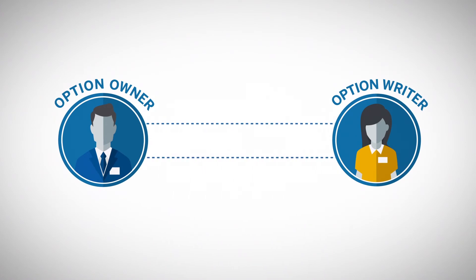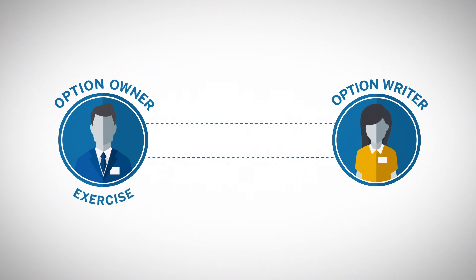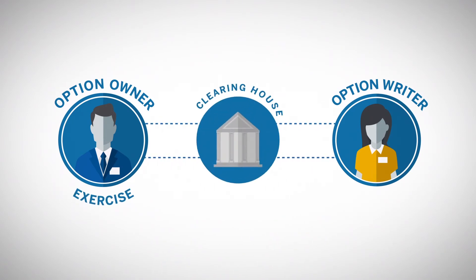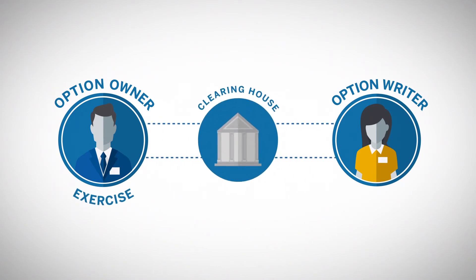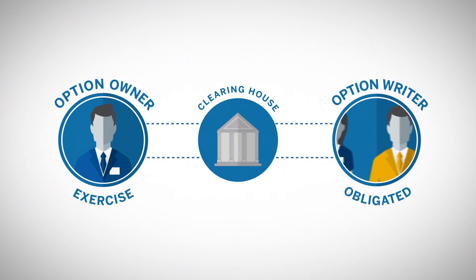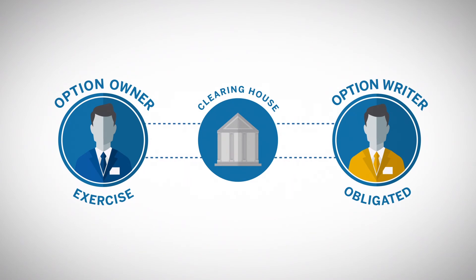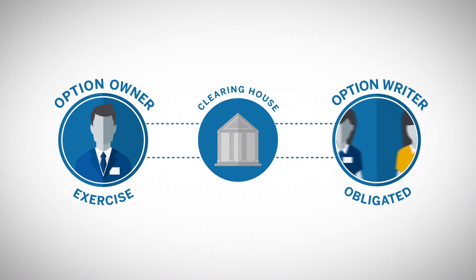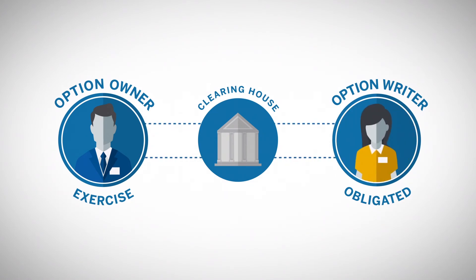When an option owner exercises the right embedded in the contract, someone has to be assigned the duty of fulfilling the obligation, and it may not be the original person who sold the option. The process of assigning options is performed by the central clearinghouse. CME Clearing uses an algorithm to randomize the assignment of the option sellers.